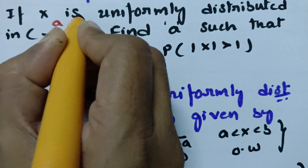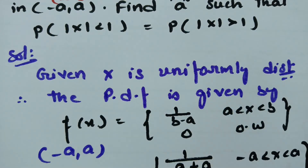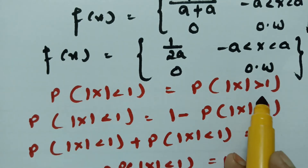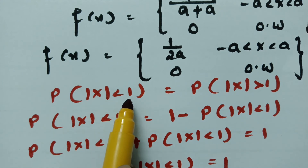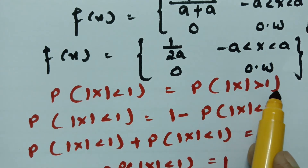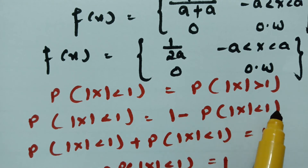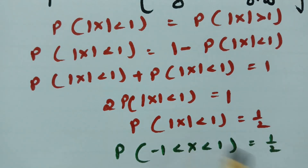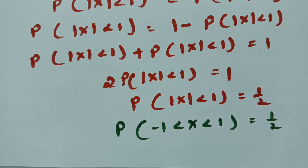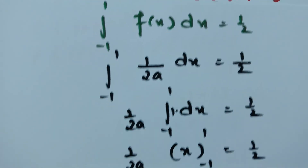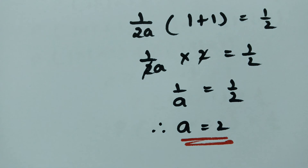To summarize: we used the uniform distribution PDF of 1/(2a) on (-a, a). Since P(|x| < 1) = P(|x| > 1) and total probability is unity, we found P(|x| < 1) = 1/2. Integrating from -1 to 1 gave us the value of a = 2.